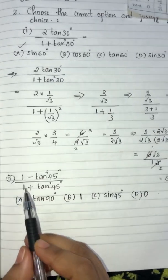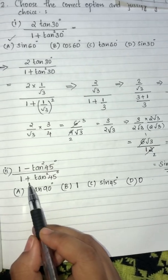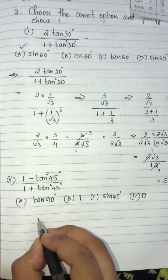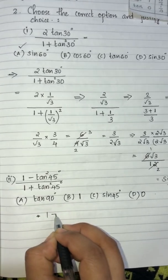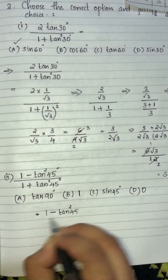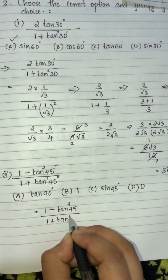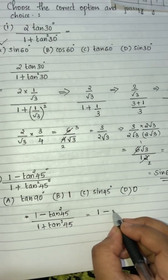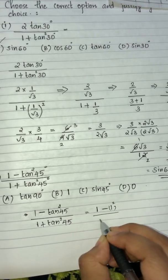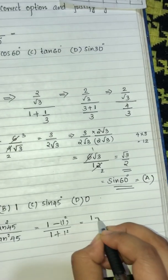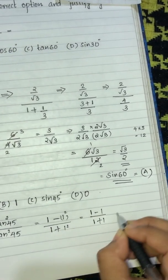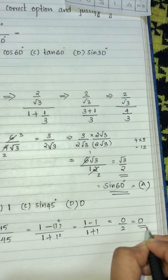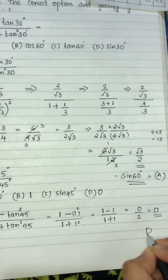Next part: (1 − tan²45) divided by (1 + tan²45). tan 45 = 1, so 1 − 1 = 0 in the numerator, giving 0/2 = 0. The answer is 0, and option D is correct.